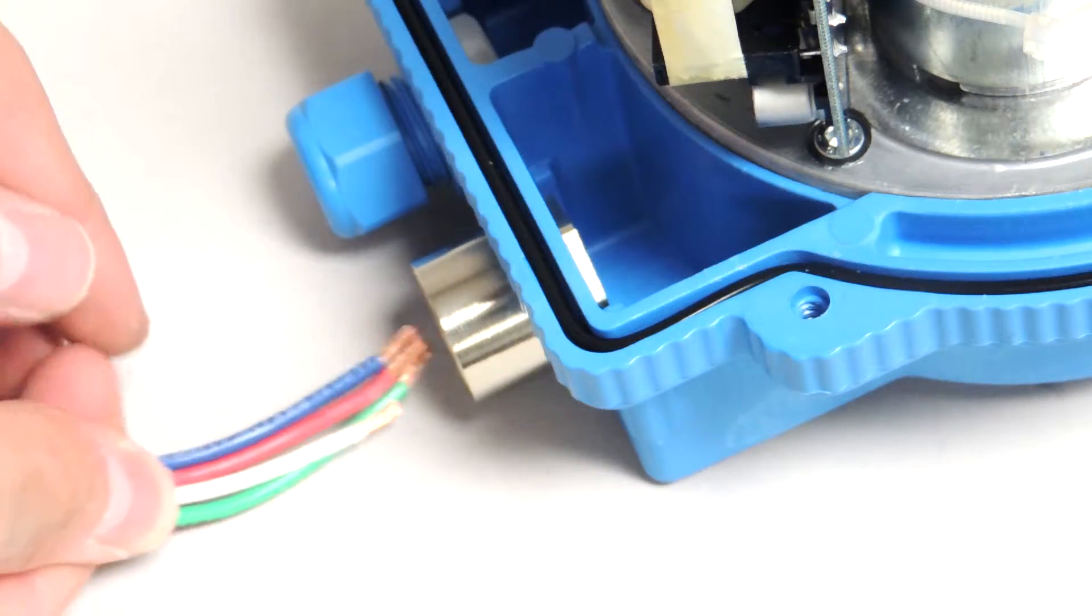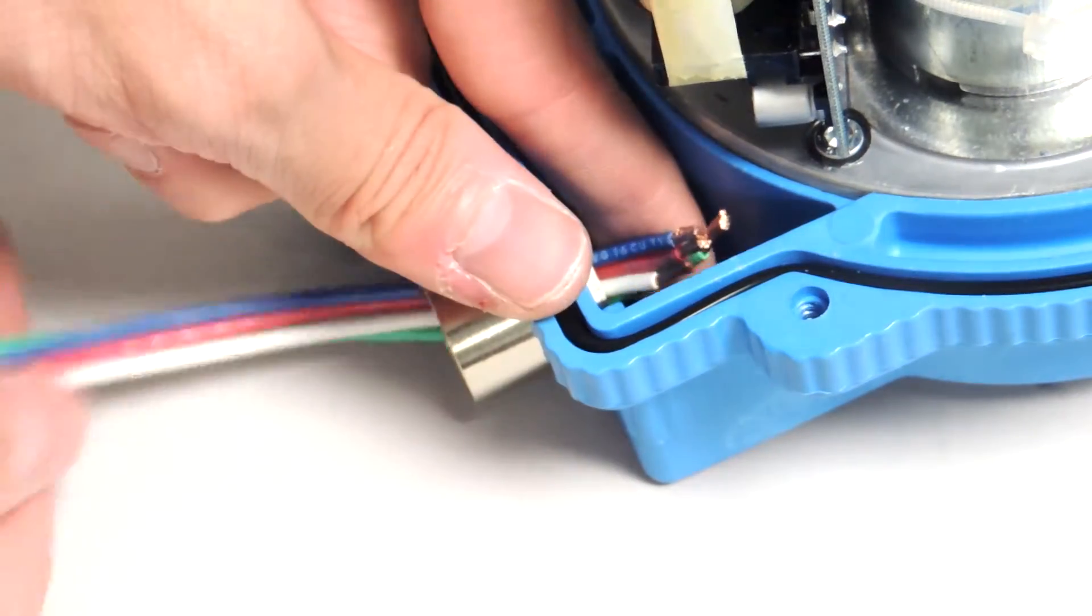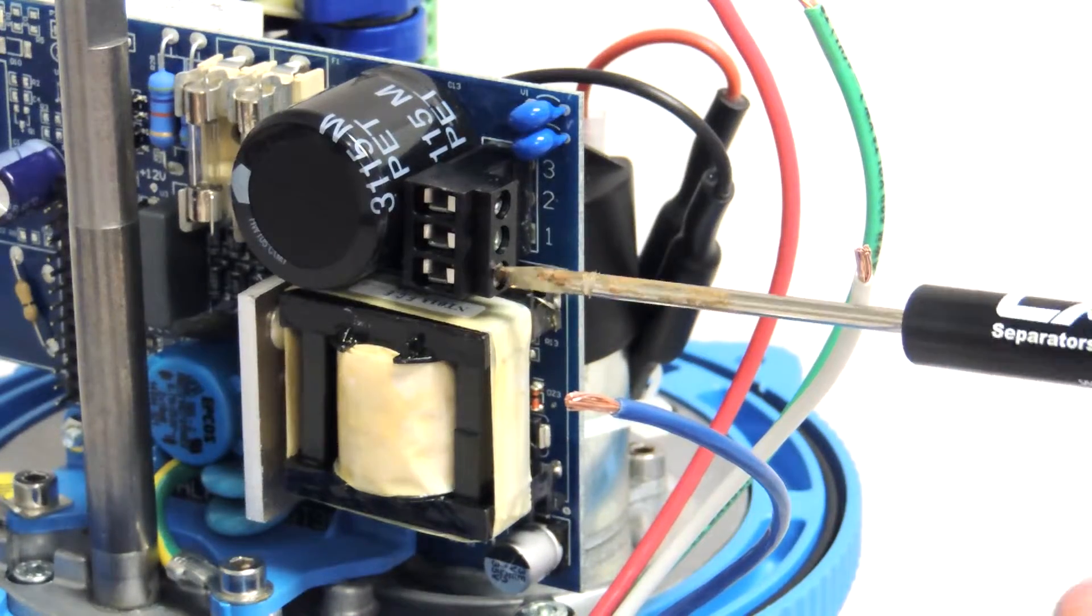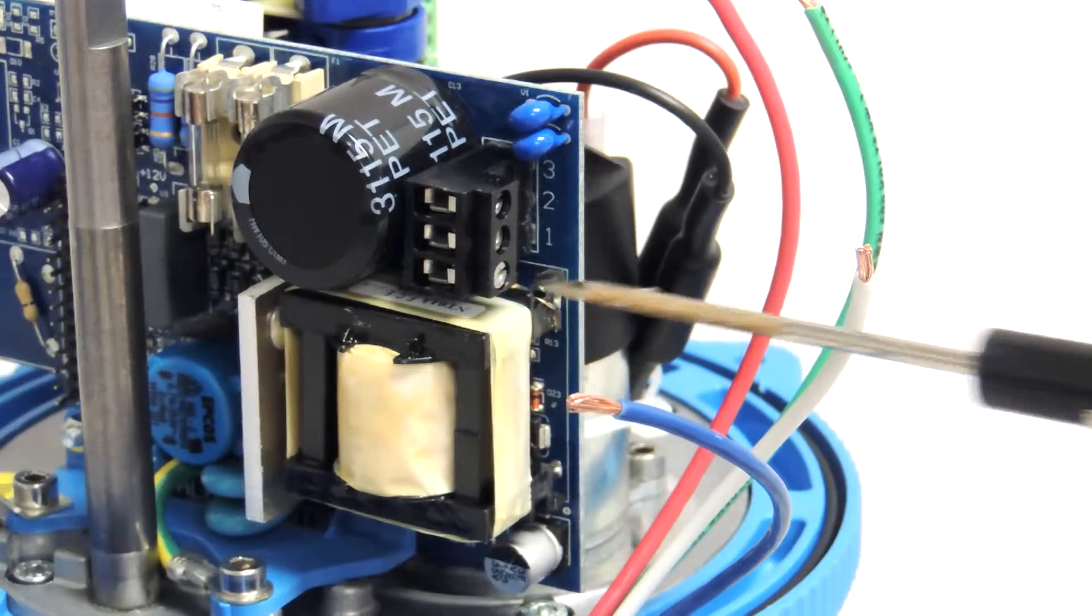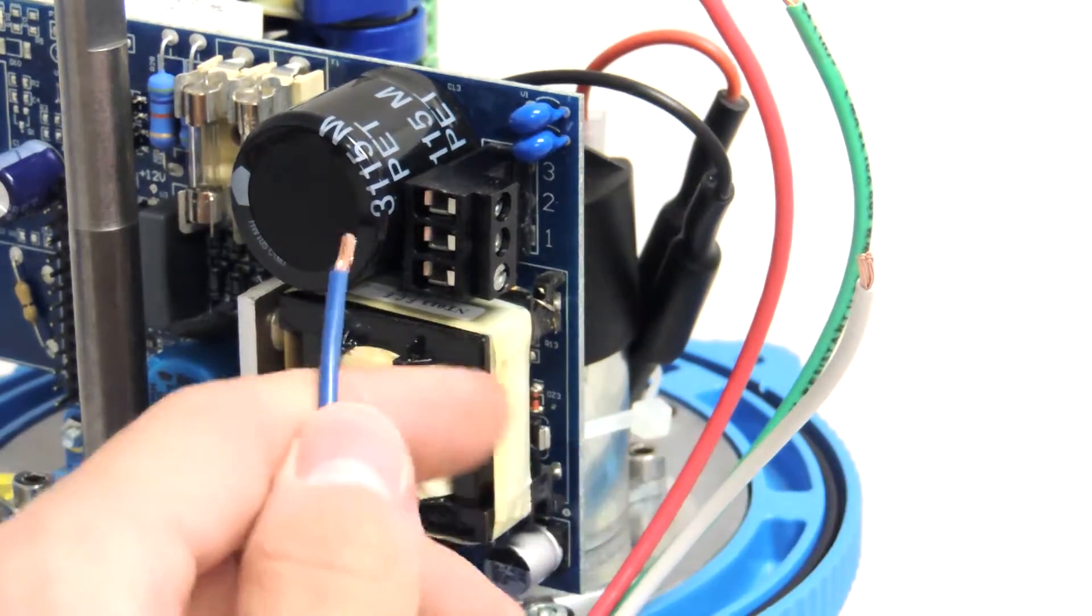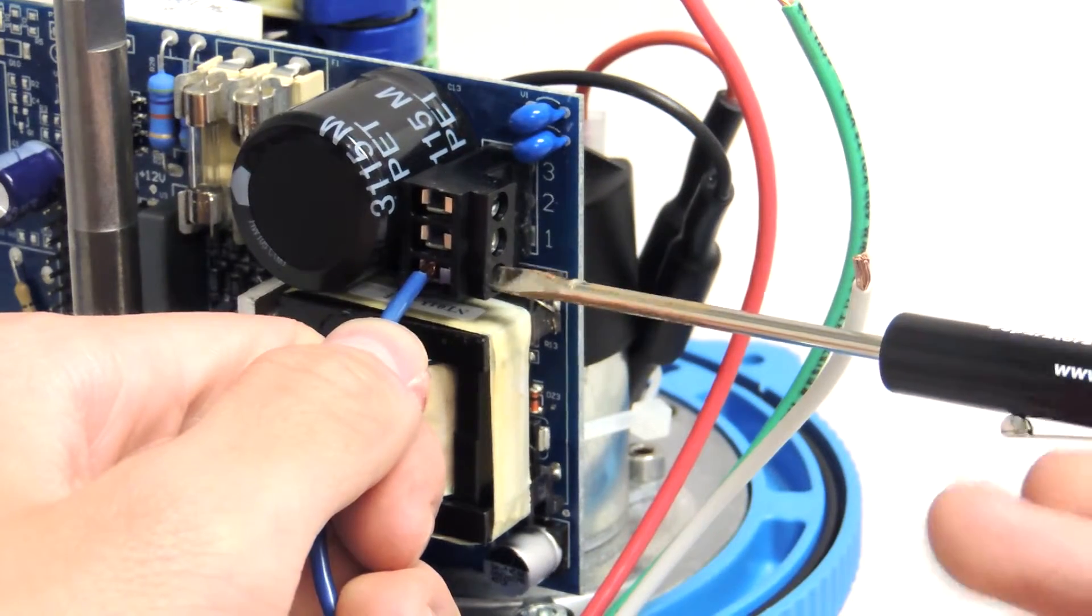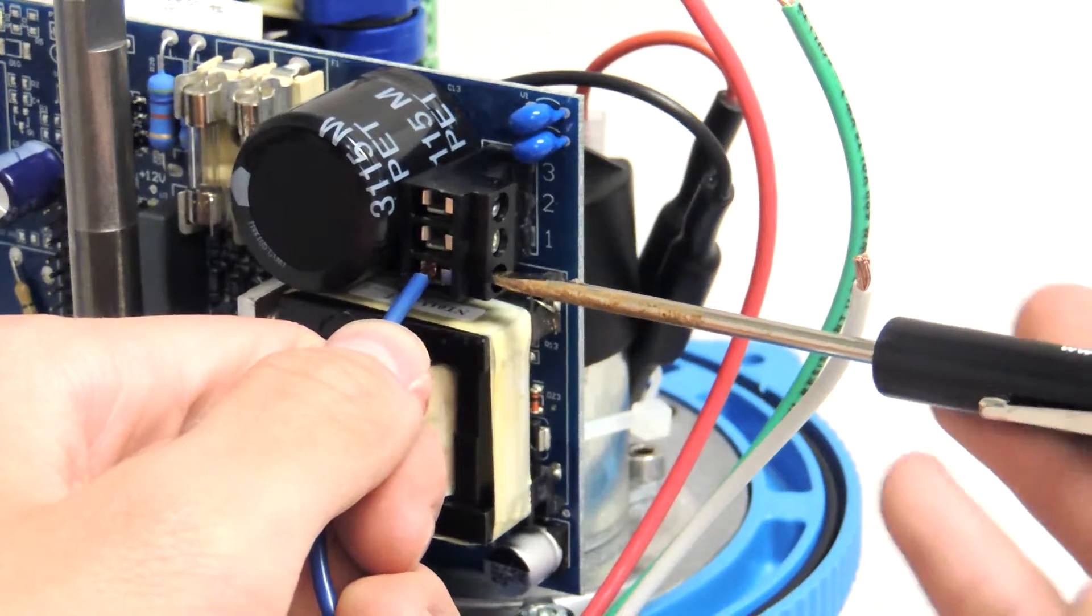Lead your wires through the conduit hole so the outer shell can be reinstalled later. Connect the blue wire to port number one on the actuator's board. To do this, unscrew the pin until the hole is open wide enough for the wire to fit inside. Then, screw the pin to secure the wire in place.